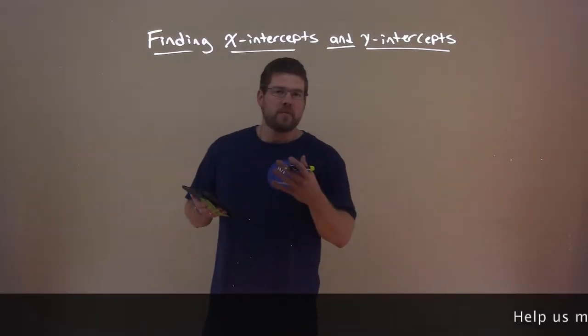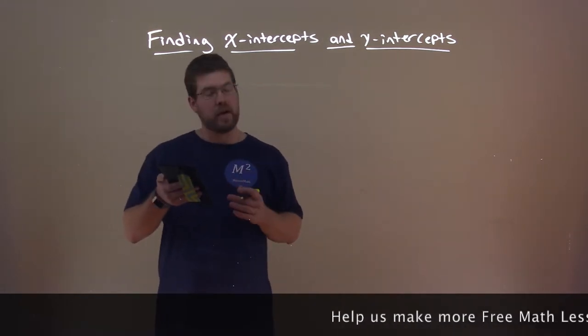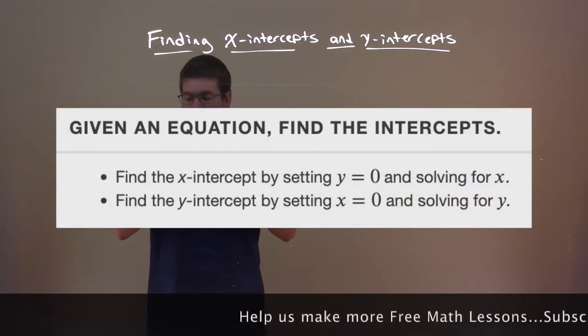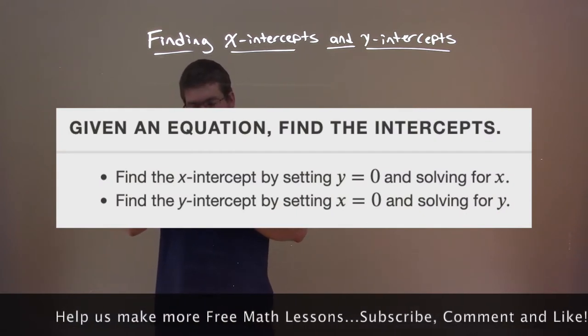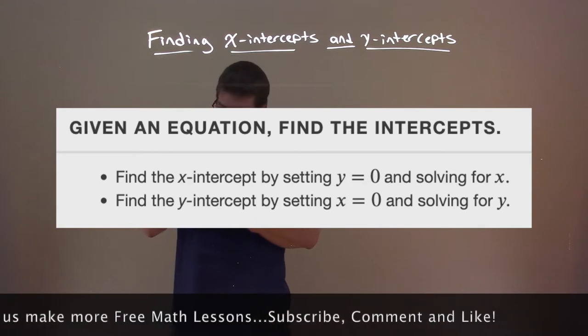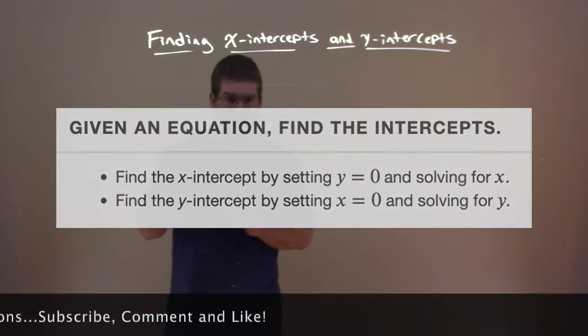The definition for how to find x-intercepts and y-intercepts are such: given an equation, find the intercepts. Find the x-intercept by setting y equals zero and solving for x. Find the y-intercept by setting x equal to zero and solving for y.